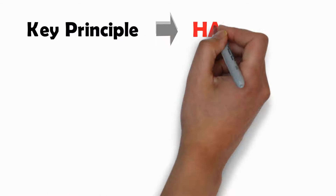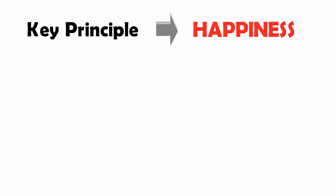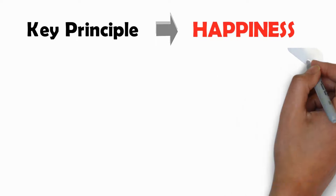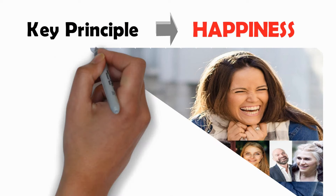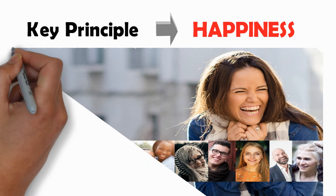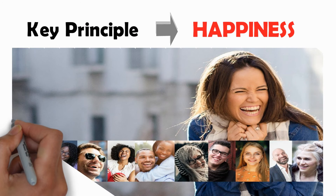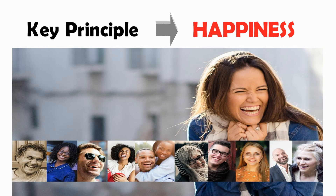The key in utilitarianism is the principle of happiness. An act is good or morally right if it produces the greatest happiness to the greatest number of people, and bad or immoral if it produces more harm or pain than benefits or happiness to the greatest number of people.